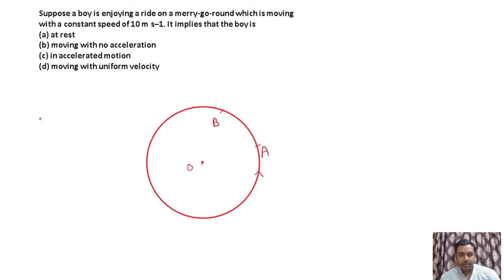This question is about uniform circular motion. What is uniform circular motion? It is a motion where the speed of the object is constant, but the velocity of the object changes.